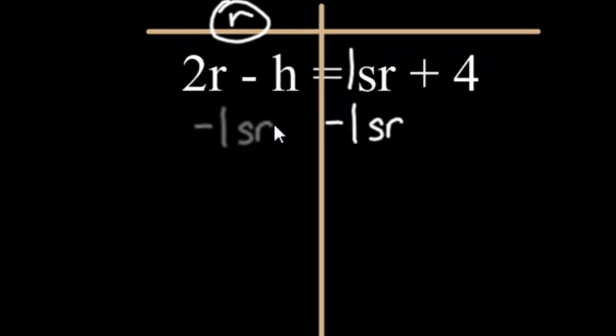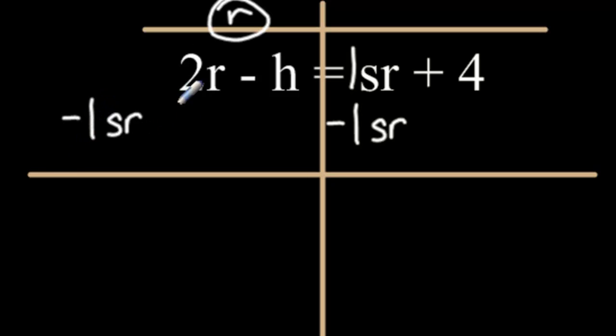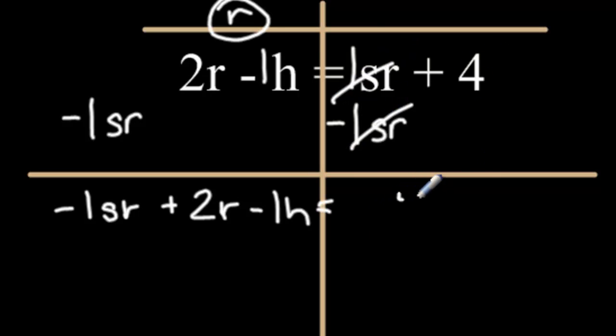Ask yourself, are any of these two terms alike? No, they're not. Just put it aside. From this point, just start calculating things. Negative 1sr we didn't touch, so that just drops straight down. The 2r we also didn't touch, so the positive 2r drops down. Negative h, if you want to make it less confusing, again you can sneak in that 1 right there. That drops straight down. Equals. The 1sr minus 1sr, we cancel those out and I'm left with a 4 on the right side.